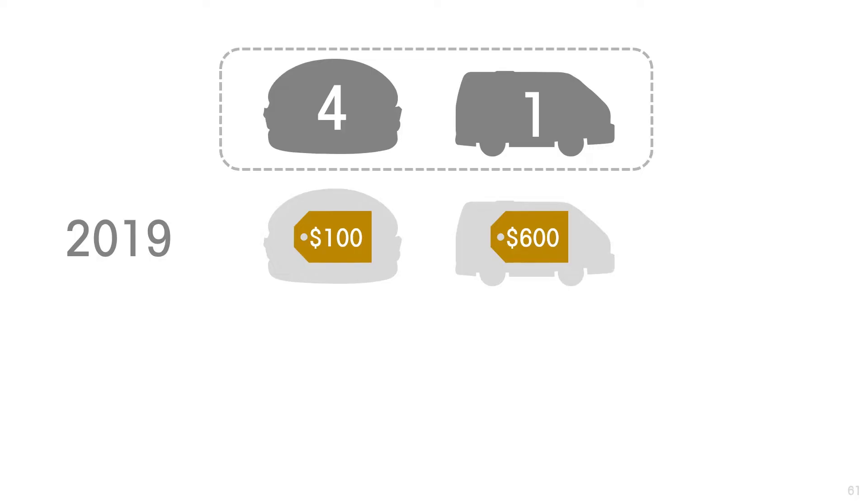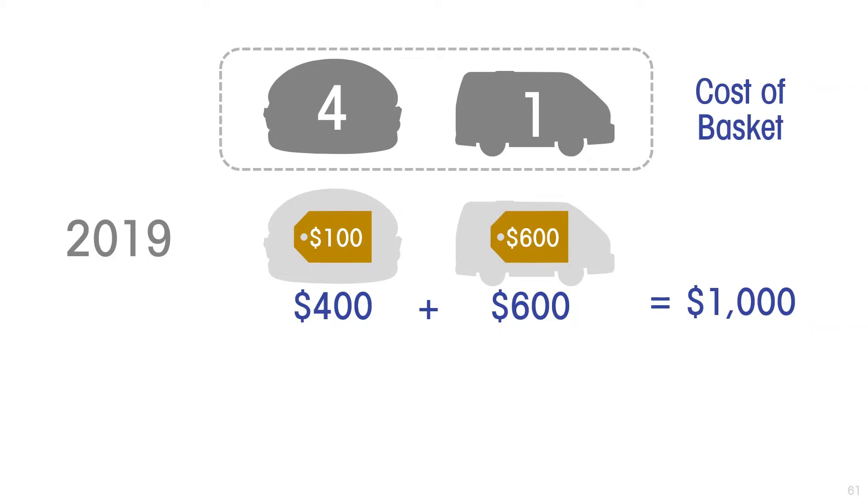To see how statistical agencies actually do their calculation, we're going to set up a simple economy with only two consumer goods: food and transportation. After the survey of consumers in this simplified economy, we determined that in a typical month, four food items are purchased and one transportation ticket. In 2019, food cost $100 and the price of transportation was $600, so the cost of purchasing this basket would have been $1,000.